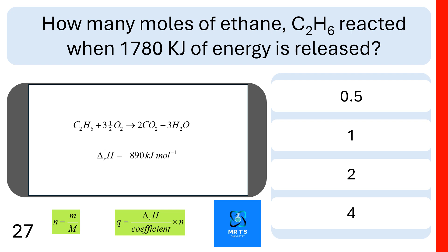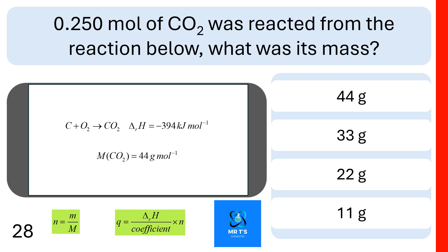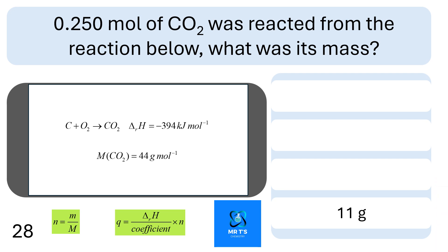Question 27 — nearly there. How many moles of ethane, C2H6, reacted when 1780 kilojoules of energy is released? Was it half a mole, one mole, two moles, or four moles? The correct answer here was two moles of ethane reacted. Question 29. If 0.25 moles of carbon dioxide was produced in the reaction below, what was its mass? Was the mass produced 44 grams, 33 grams, 22 grams, or 11 grams? 11 grams is the correct answer. Well done if you got that.